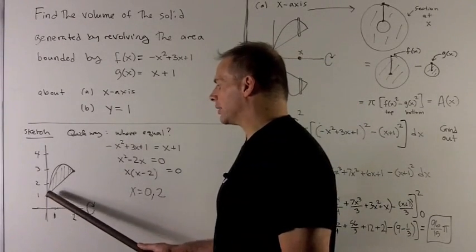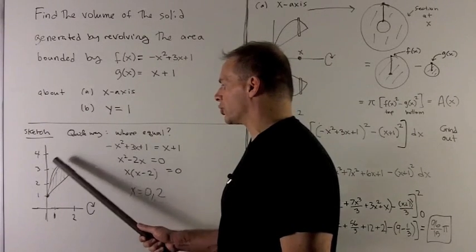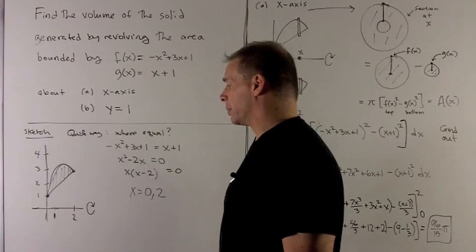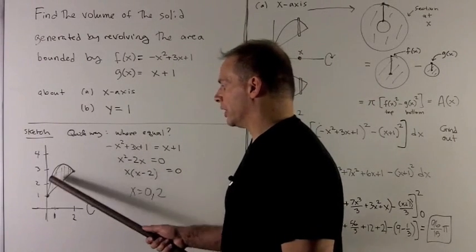So I can plot the two points off the line there. Since I know that these two functions are equal at those points, I can just draw in a downward-facing parabola on top of the line. And there's the region we're going to rotate.